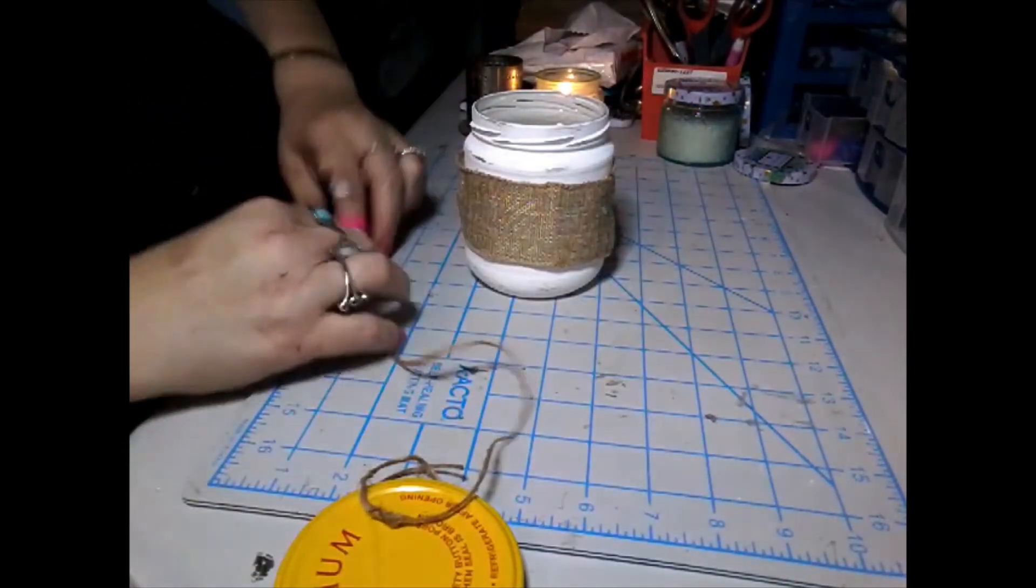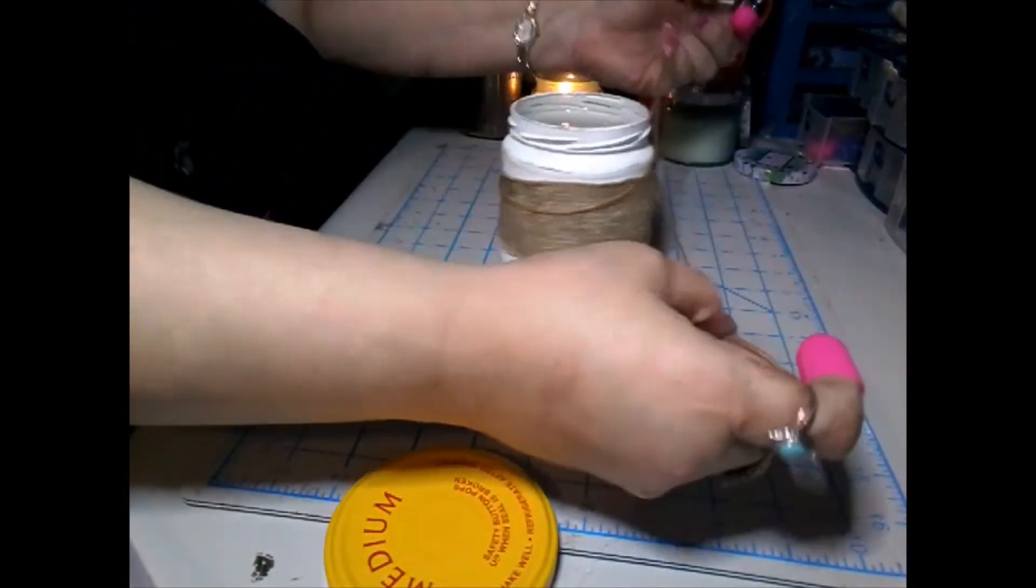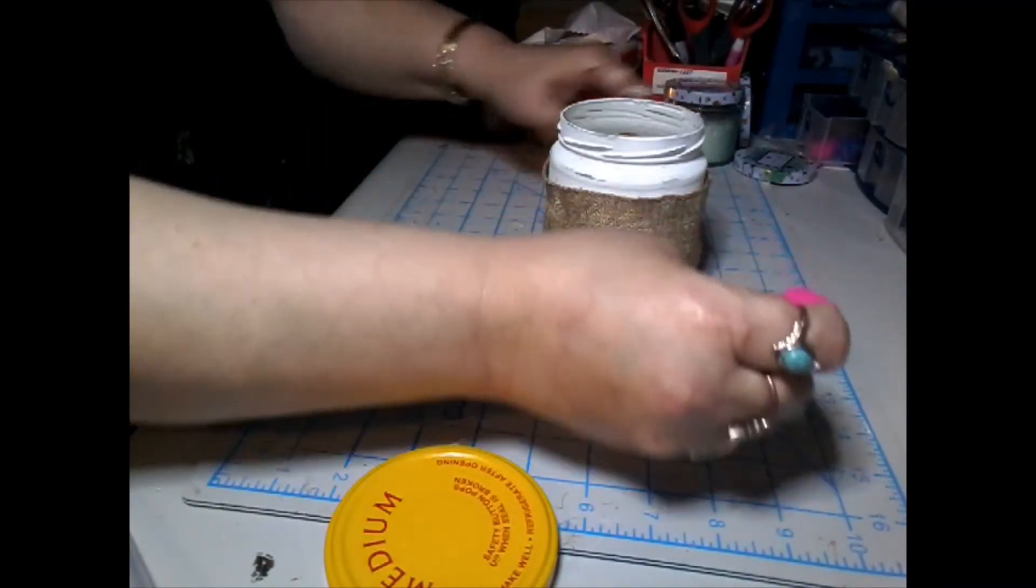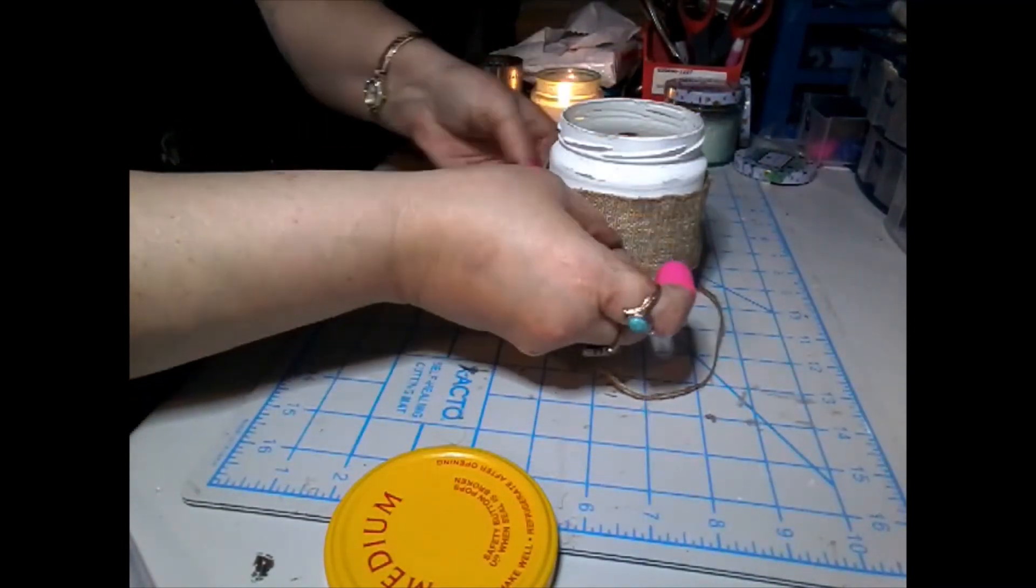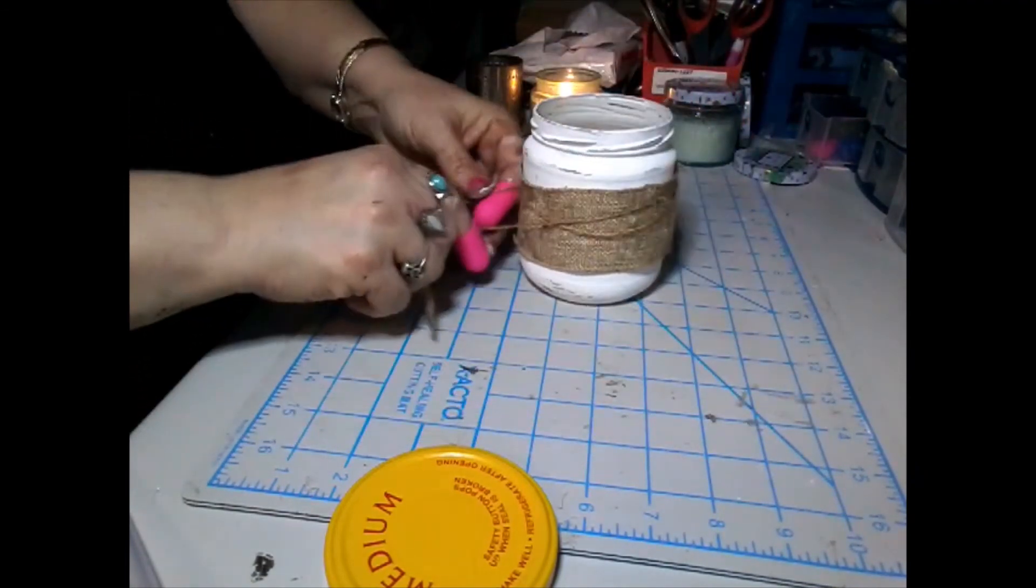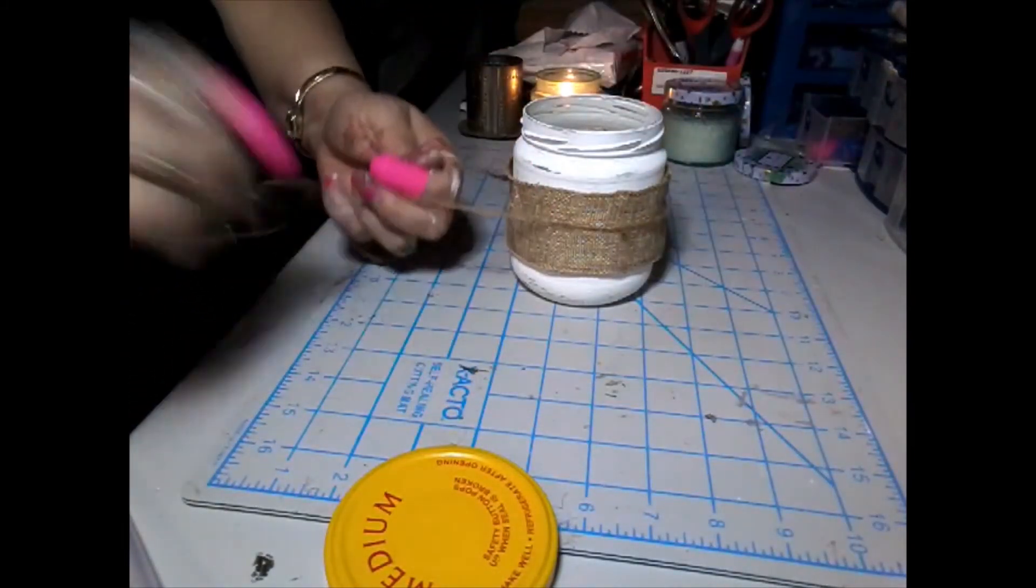We're going to take this jute next and just wrap it around the middle of our jar a couple times, two or three times, whichever you'd like, and then we're just going to tie it in a knot in the front. I really hope you guys are enjoying my videos. I'm still learning how to edit, so bear with me on all that.